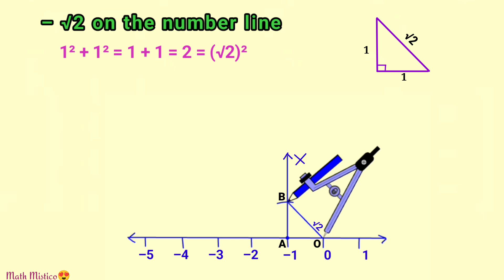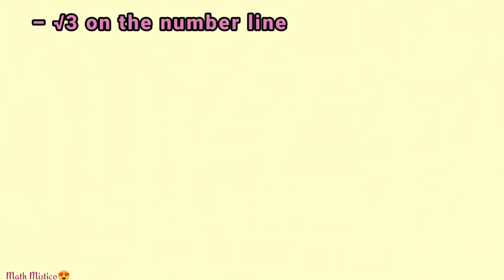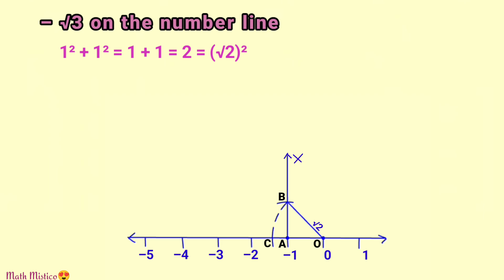As it is a negative number, we will cut an arc to the left of O. Moving our compass downwards, we get the point of intersection C. As this point is at a distance of √2 to the left of origin, it is the position of minus √2. You can see that it is just like √2, but the direction has reversed.